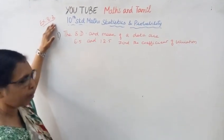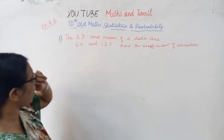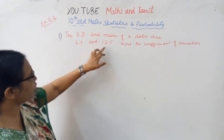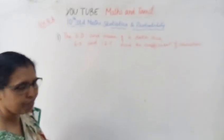Exercise 8.2: The standard deviation and mean of a data are 6.5 and 12.5. Find the coefficient of variation.